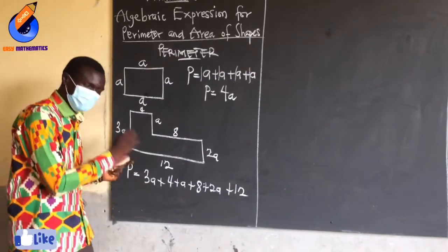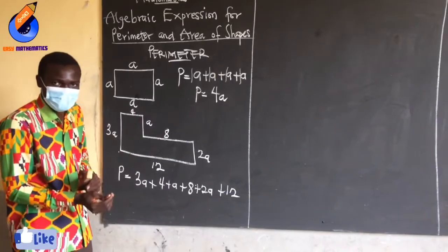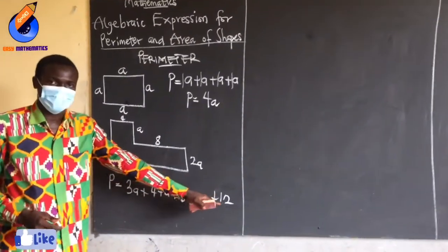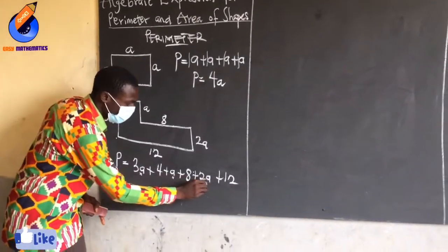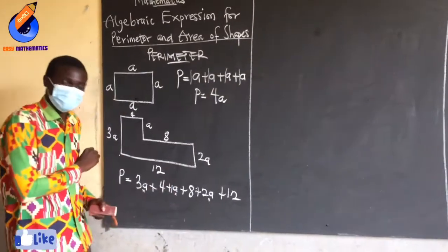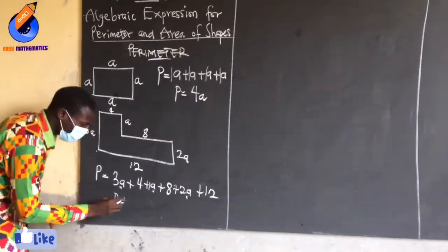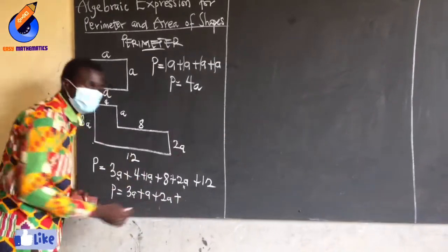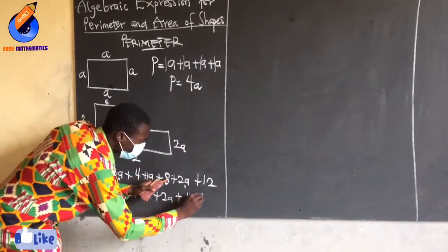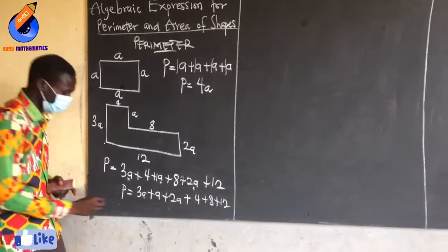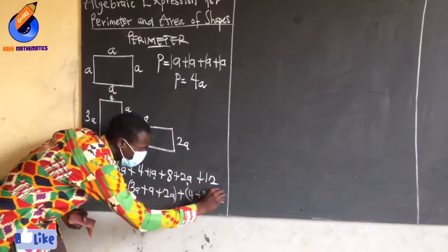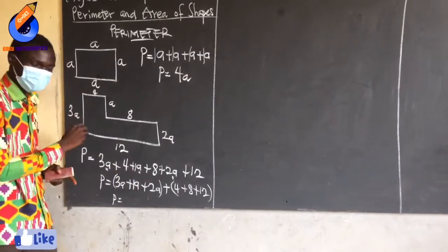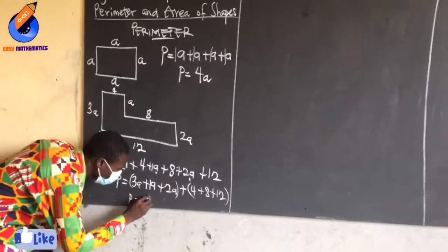When you look at the shape carefully, you have a number and a variable, a number, a number, and a variable. Last week we said that to simplify an expression, you have to group like terms. The like terms are the numbers having the same variables. The number here is one, but we don't write it. So I am going to group like terms: P equals 3A plus A plus 2A, then plus four plus eight plus four.